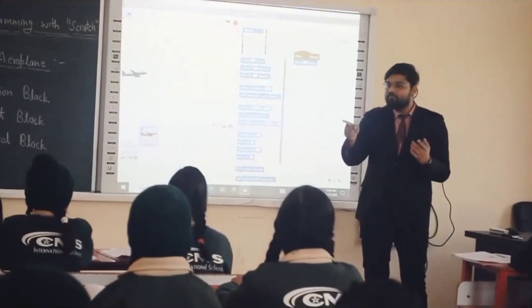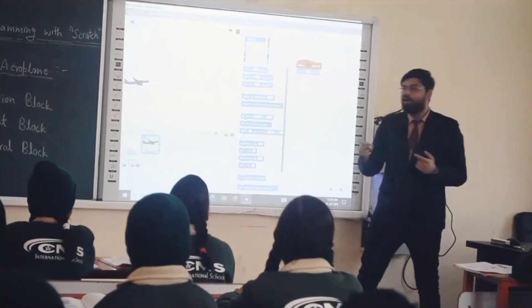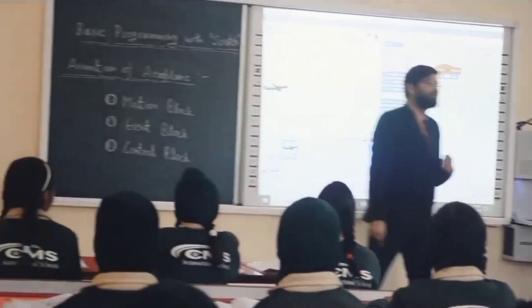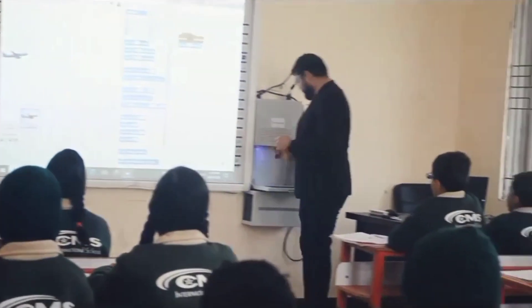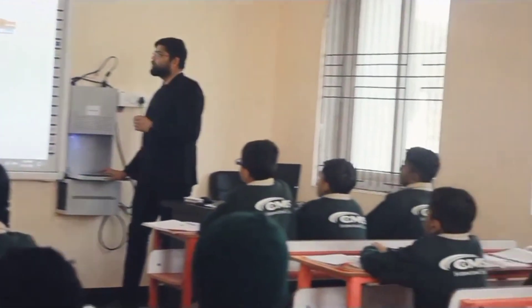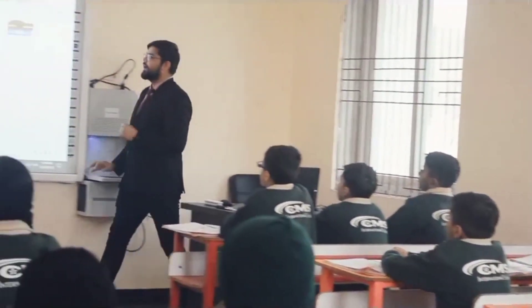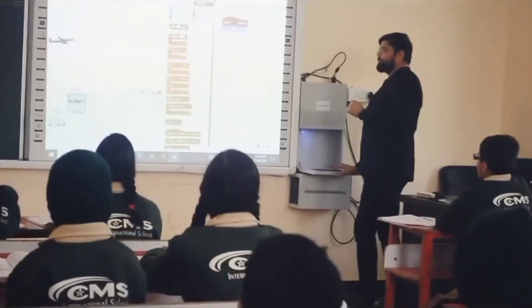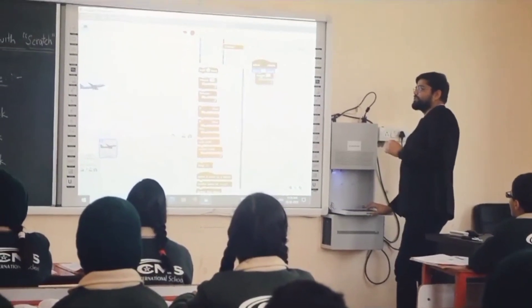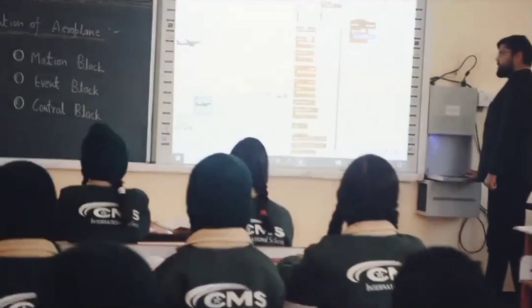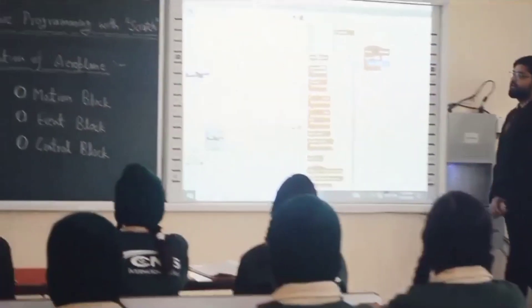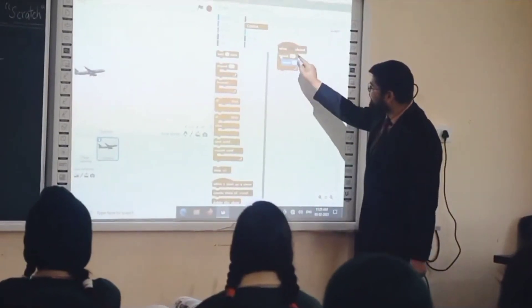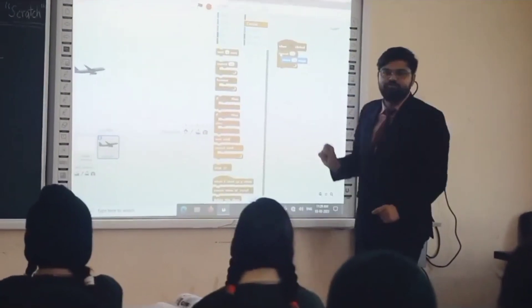To slow down the speed, what will we use? Repeat. Very good — use the repeat block. Go to the control section and use repeat, just take the repeat block and place it here. Now we have to assign a number — repeat 10 and move 10 steps.